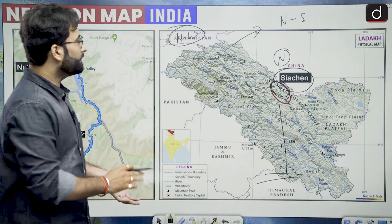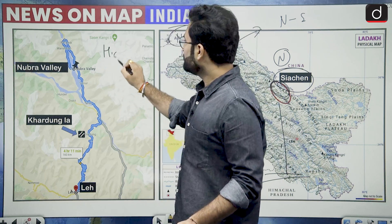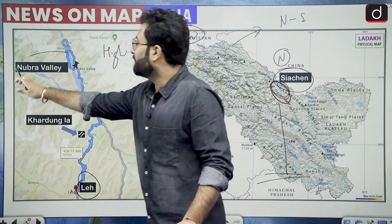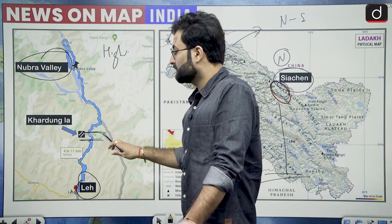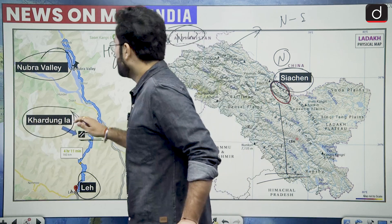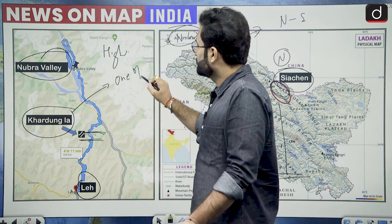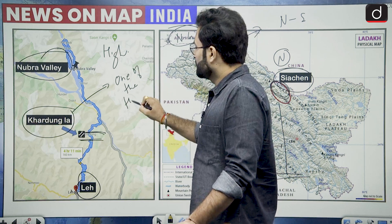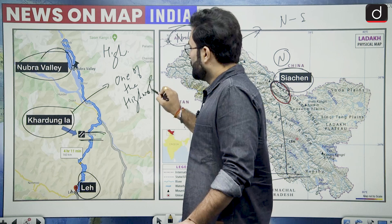When we talk about the highway or motorable pass, this is the highway which connects Leh to Nubra Valley, which passes through this particular pass — this is Khardungla Pass. This pass is one of the highest motorable passes in the world.